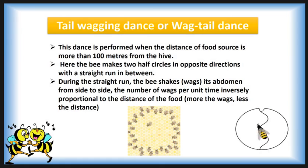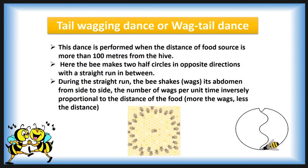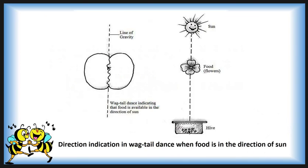During the straight run, the bee shakes its abdomen from side to side. The number of wags per unit time is inversely proportional to the distance of the food — more abdominal shaking indicates the food source is closer to the hive.